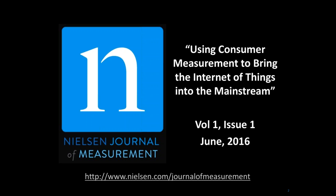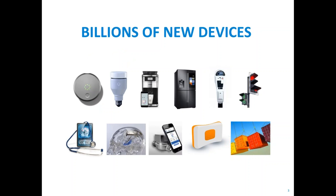The Internet of Things is about adding billions of new devices to the internet. Predictions are that within five to ten years there may be as many as 25 to 50 billion new devices connected to the internet — from categories never on the internet before — adding seven trillion dollars of value to the global economy. This includes devices ranging from smart door locks to smart light bulbs, coffee machines, connected refrigerators, parking meters, and traffic lights.